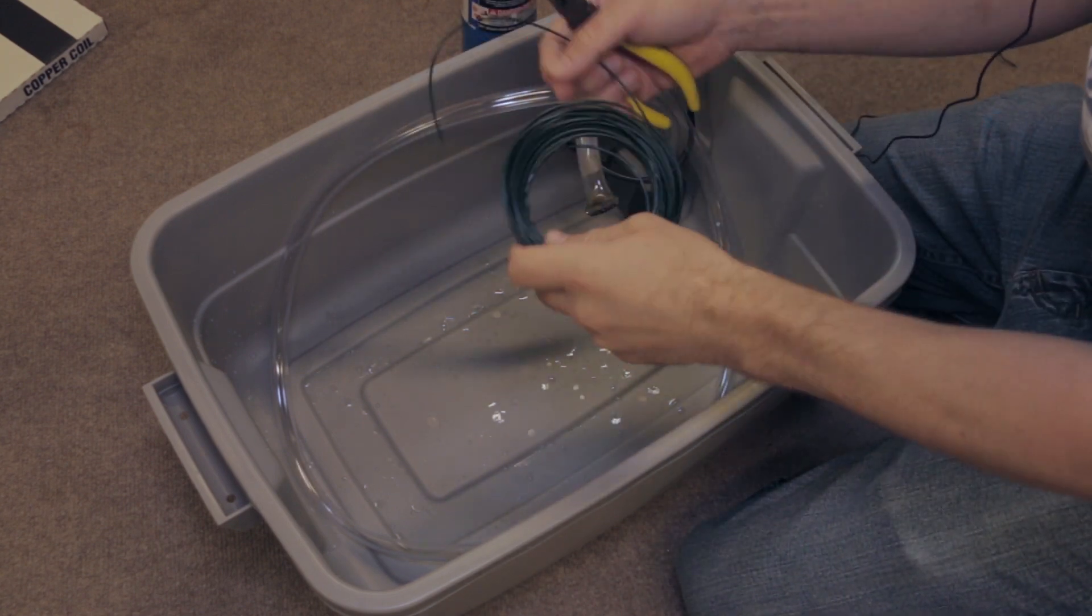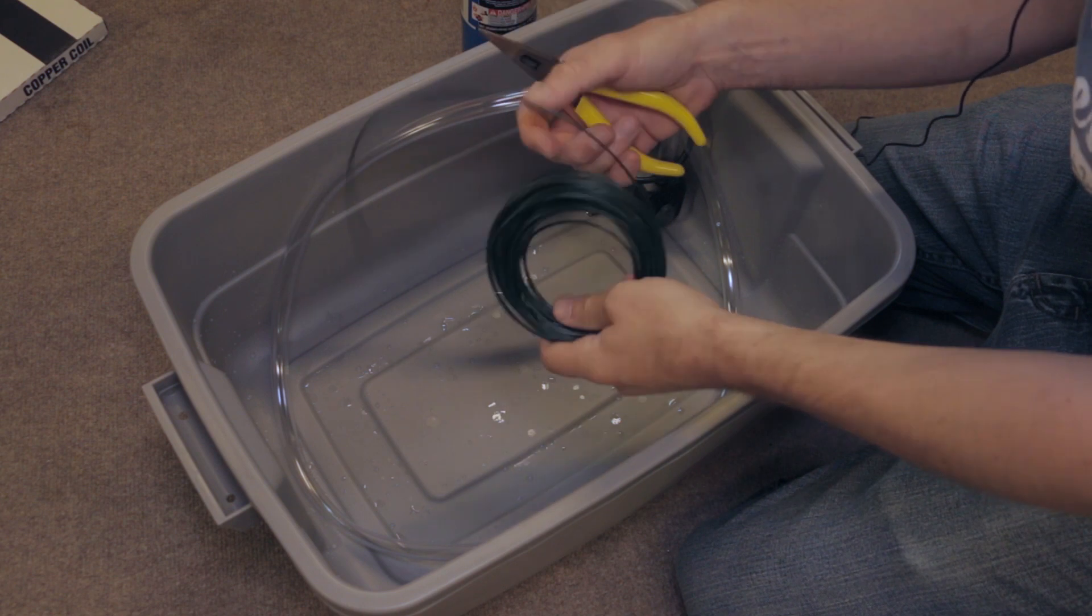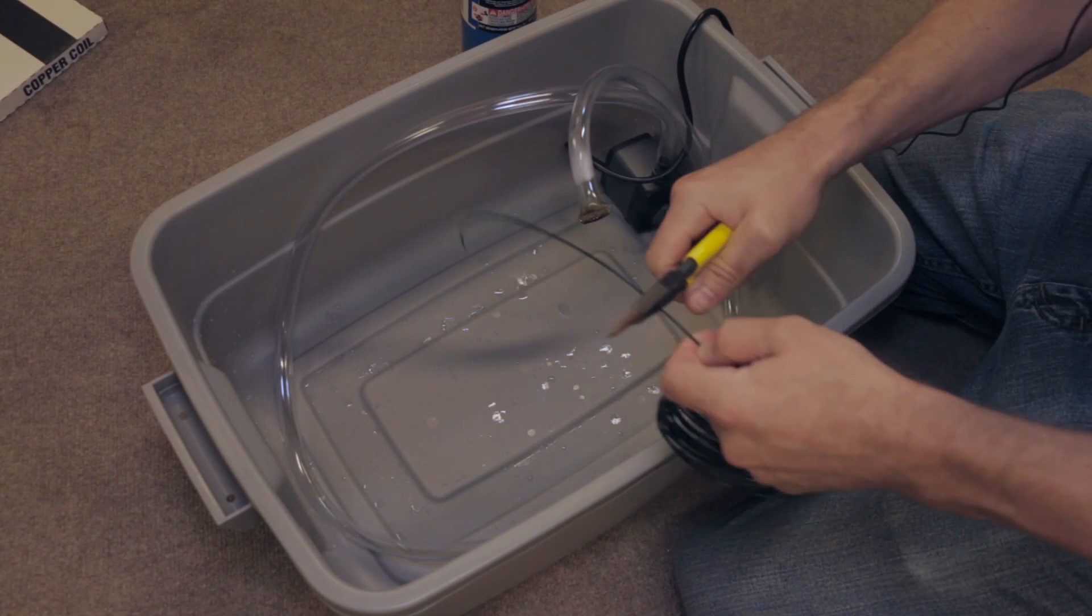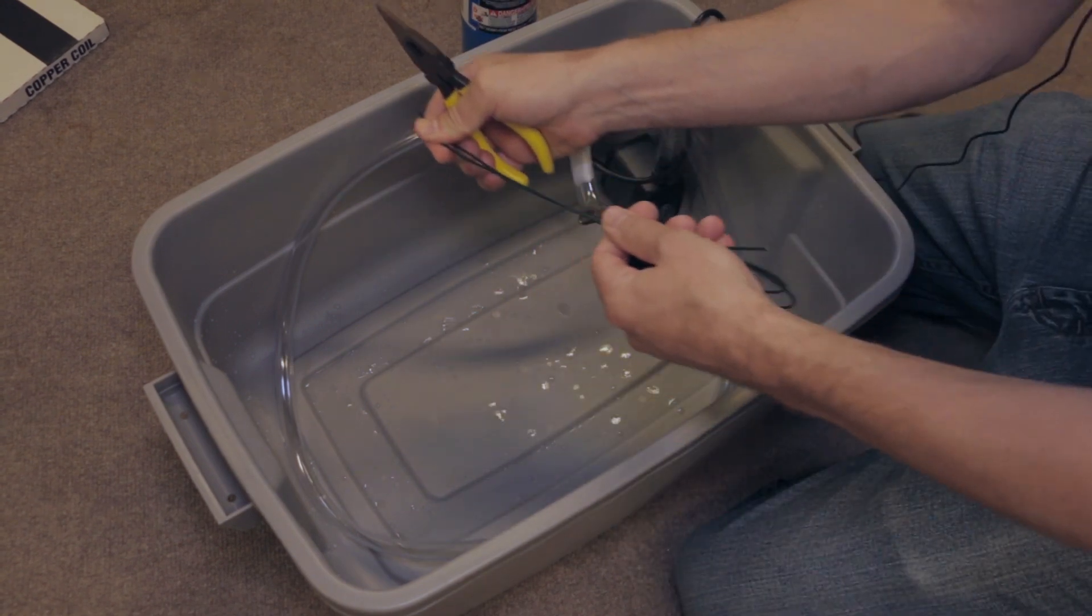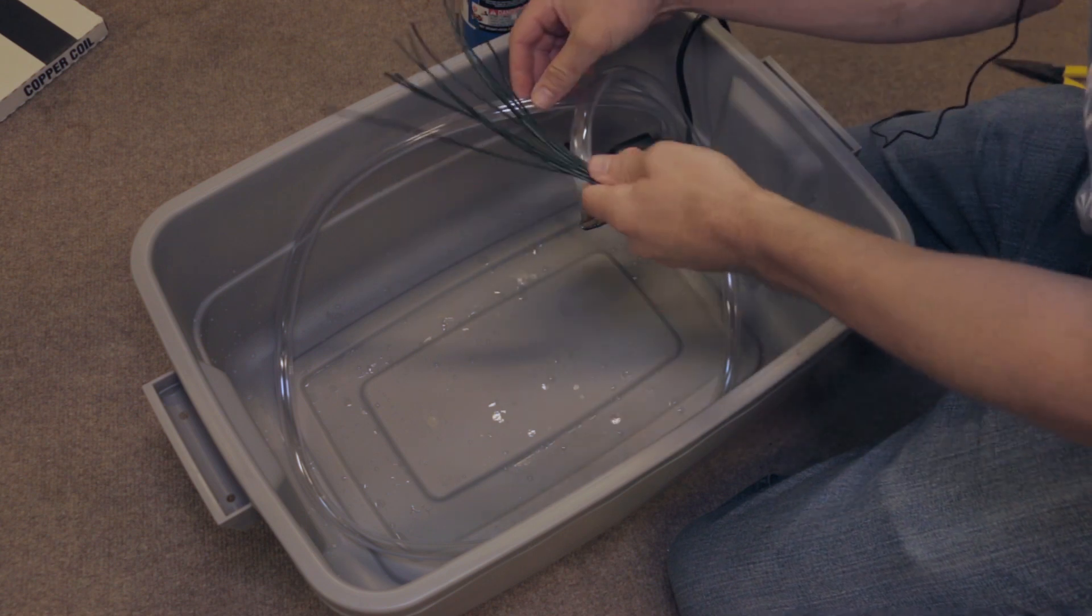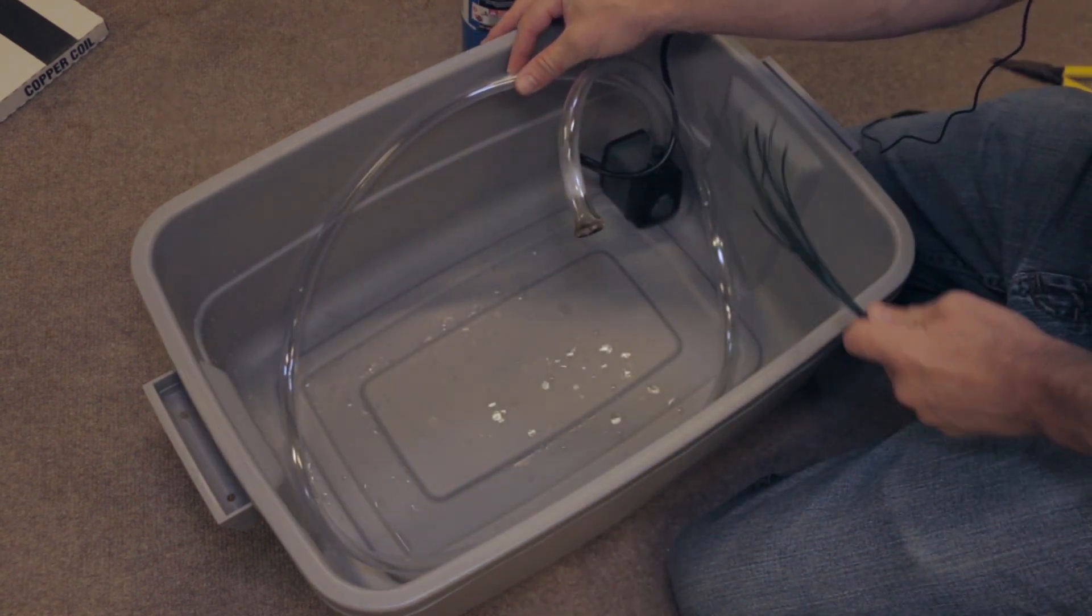Now what you want to do is take your wire - honestly you could use anything, you could use a coat hanger and bend it up, you could use copper wire - but this is what I'm using today. So I'll cut off probably 10 of these. Now that I got my lengths of wire, I'm going to simply use those to hang this vinyl tubing along the outside edge of this container.